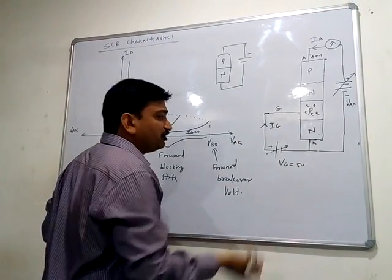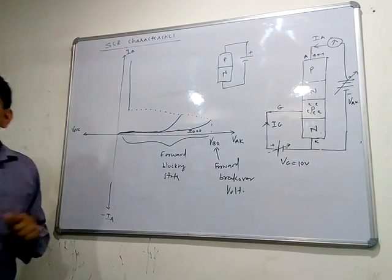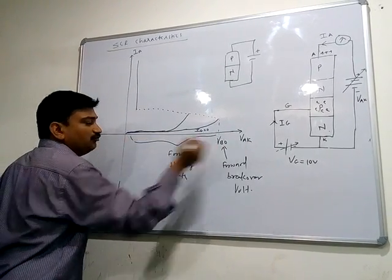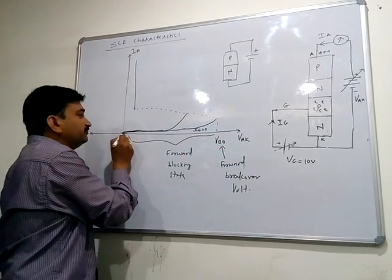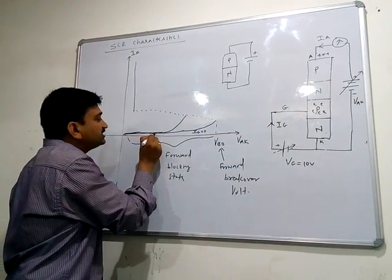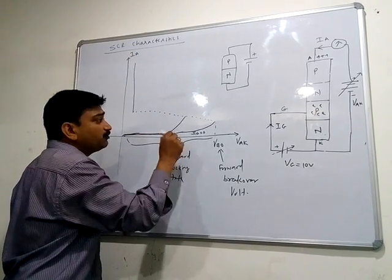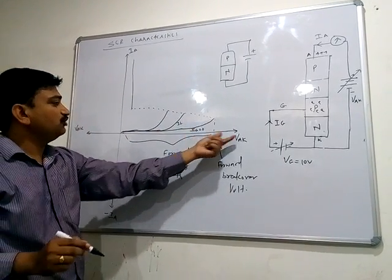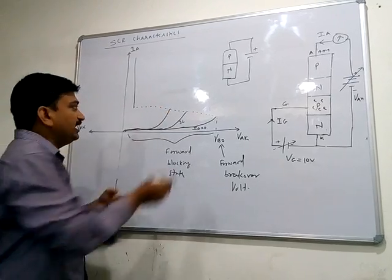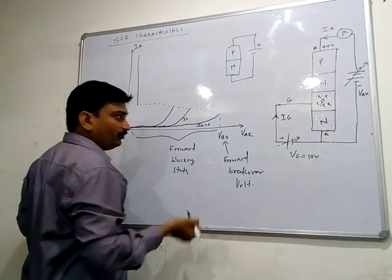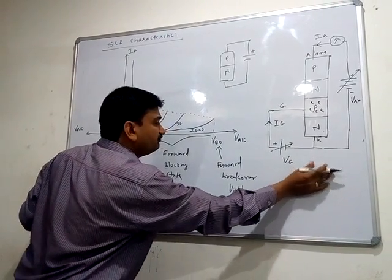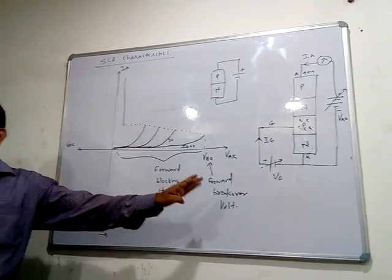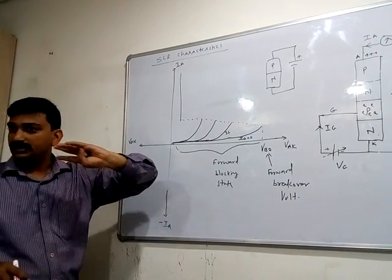Next, we increase VG to 10 volts and repeat the experiment. Initially when we increase VAK the current is very small, but at a voltage even less than the previous case the SCR turns on — because the higher IG means it turns on at a lower VAK. It passes through the transition state and the anode current rises. As you go on increasing VG the turn-on voltage curves shift lower.